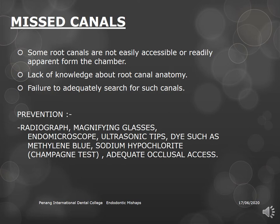Prevention of missed canals includes carefully examining radiographs for root outlines and canals, using the SLOB (cone shift) technique with two radiographs to detect extra roots, using magnification such as loupes or a microscope, using ultrasonic tips to remove ledges and shelves in the pulp chamber, and using dyes like methylene blue, which stains organic pulp tissue to help locate canals.